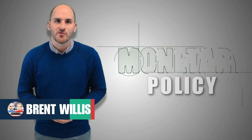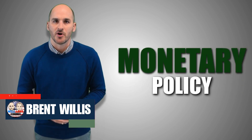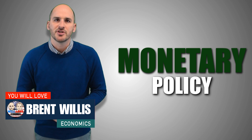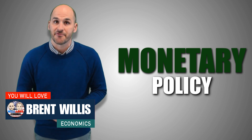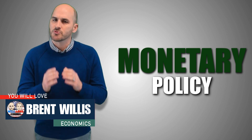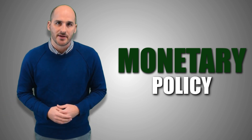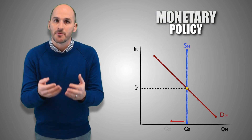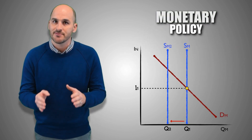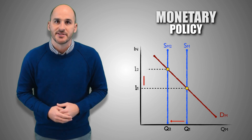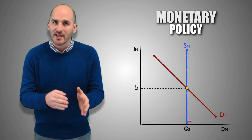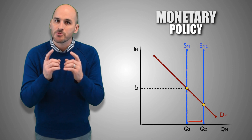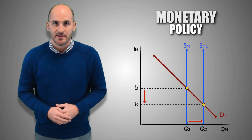When the Federal Reserve uses monetary policy to help stabilize the economy, its primary goal is to initiate changes in investment spending by firms, which will directly impact aggregate demand. The Fed will attempt to manipulate the money supply with appropriate monetary policy, which in certain economic conditions can make it more or less advantageous for firms to take out loans and help drive the economy back to full employment.